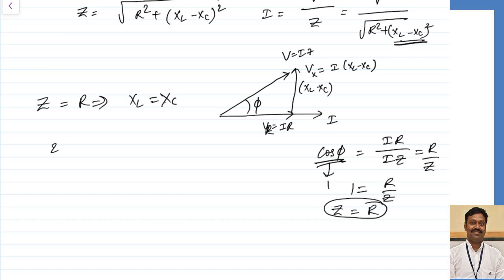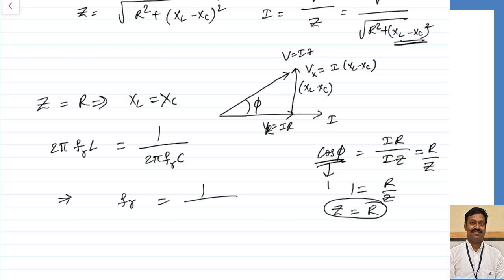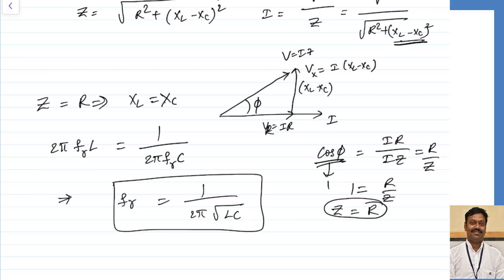XL can be represented in terms of frequency as 2πfL, and capacitor reactance as 1/(2πfC). At resonance condition, taking the frequency as FR (R stands for resonance), using the condition XL = XC, we can calculate the resonant frequency which equals 1/(2π√LC).